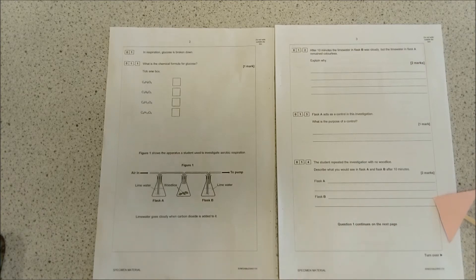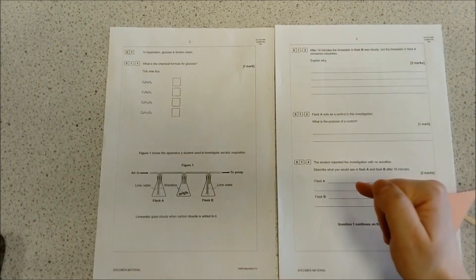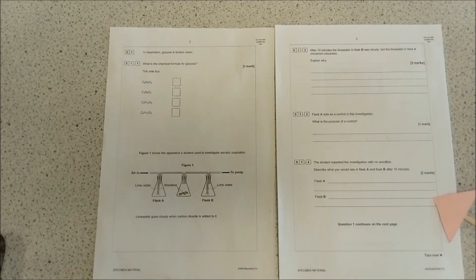The answer is that in flask A there would be no color change, and in flask B there would be no color change. There's no reason that you couldn't have the same answer for flask A and flask B. It's one of those times when you're overcomplicating it for yourself and it doesn't really need it.